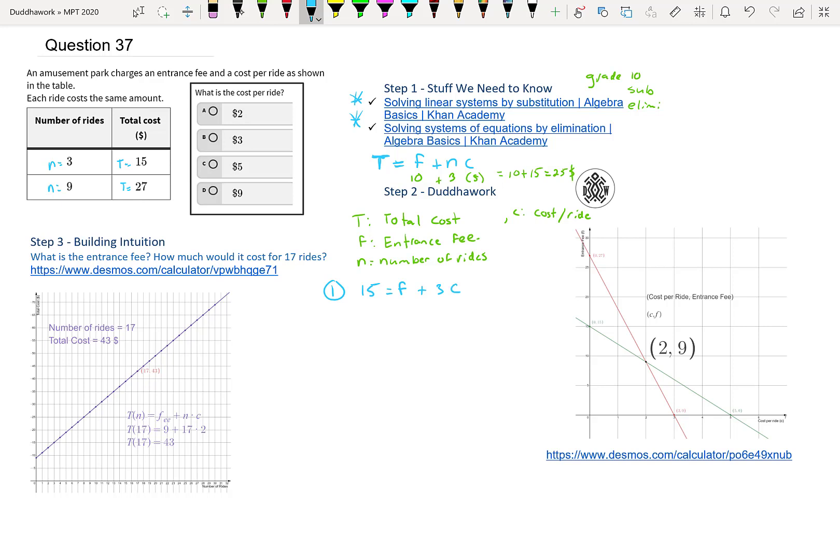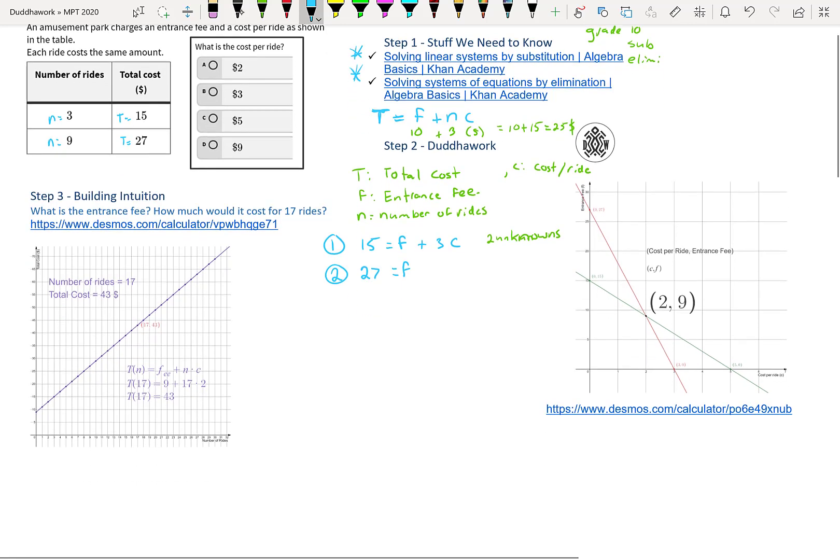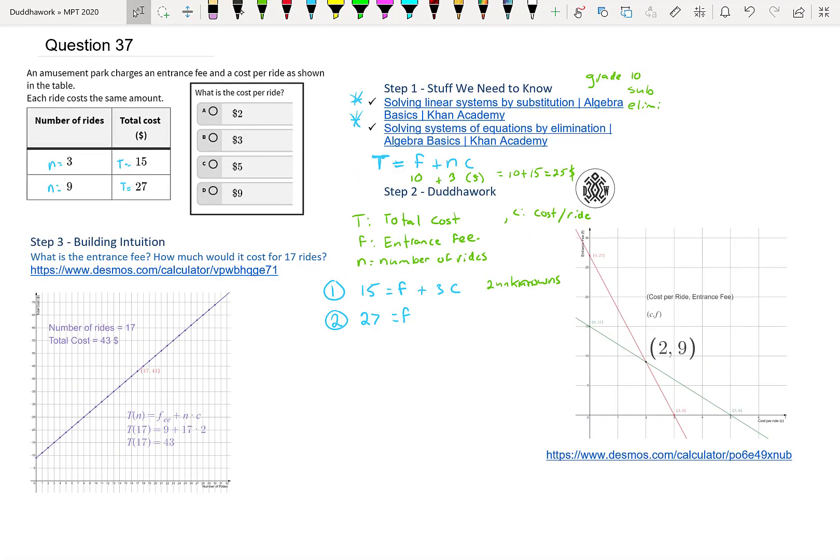So note that we have two unknowns, and we only have one equation right now. So we can't solve. If we isolate for F, we'll still have C on the other side, and vice versa. So we know we need a second equation. It's a good thing we have a second row. So the total cost is 27 for the second row. The fee is the same unknown. We don't know what the fee is. And how many rides? Well, it was nine rides and the same cost. So now we have two unknowns. Now I'll write F and C. And then we have two equations.